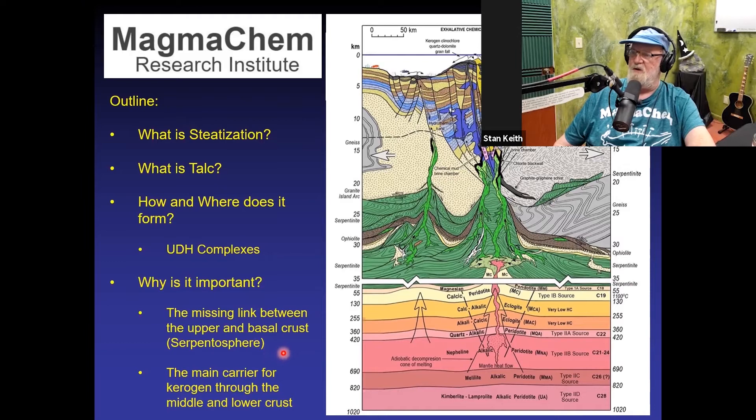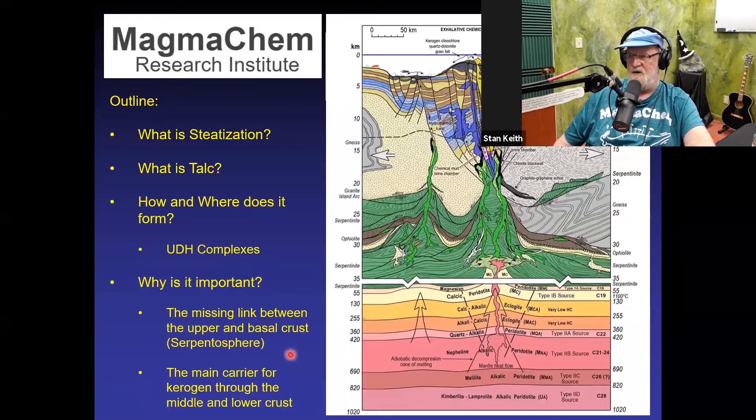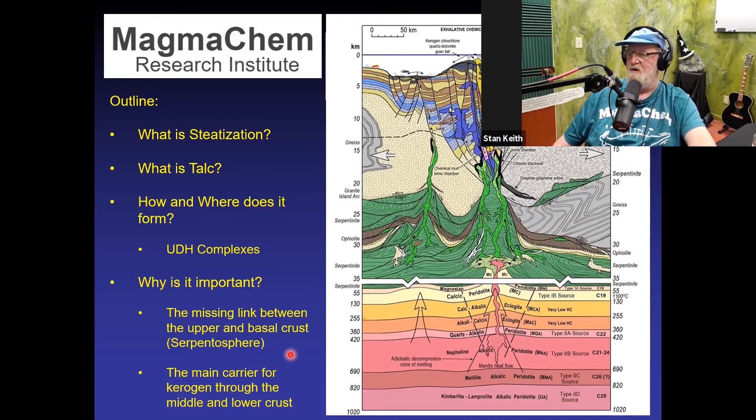And so why is all this important? Well, it's a missing link petrologically between the upper and basal crust. And it's the main carrier for kerogen through the middle and lower crust. And it's not only in the talc itself, but a lot of the kerogen will get dissolved into the brine products, but you don't see those because they wind up forming hydrothermal minerals. Brines disappear.